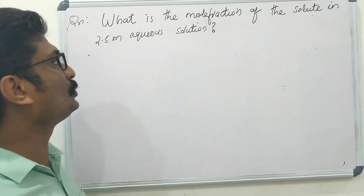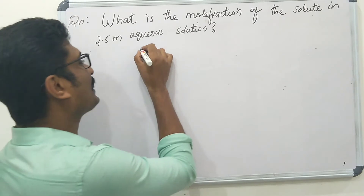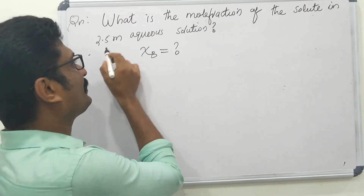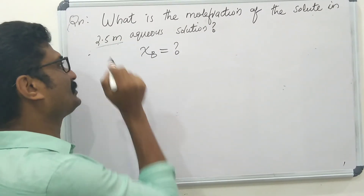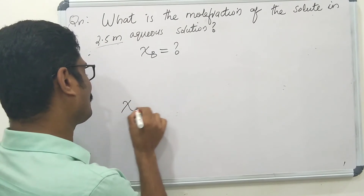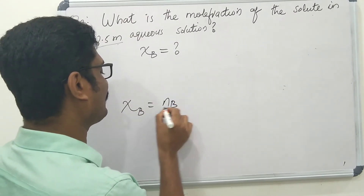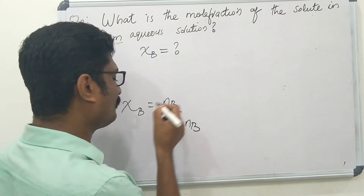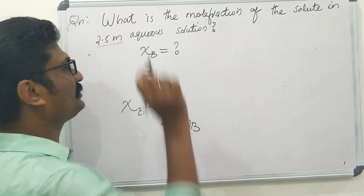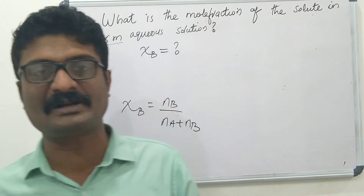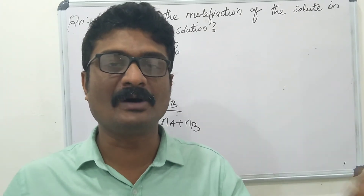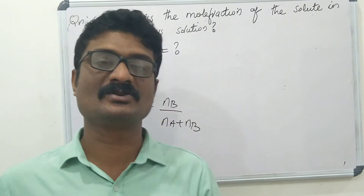What is the mole fraction of solute in a 2.5 molal aqueous solution? The mole fraction of solute equals NB divided by (NA + NB). Molality is the number of moles of solute dissolved in 1000 grams of solvent. So 1 molar solution means 1 mole of solute dissolved in 1000 grams of solvent.